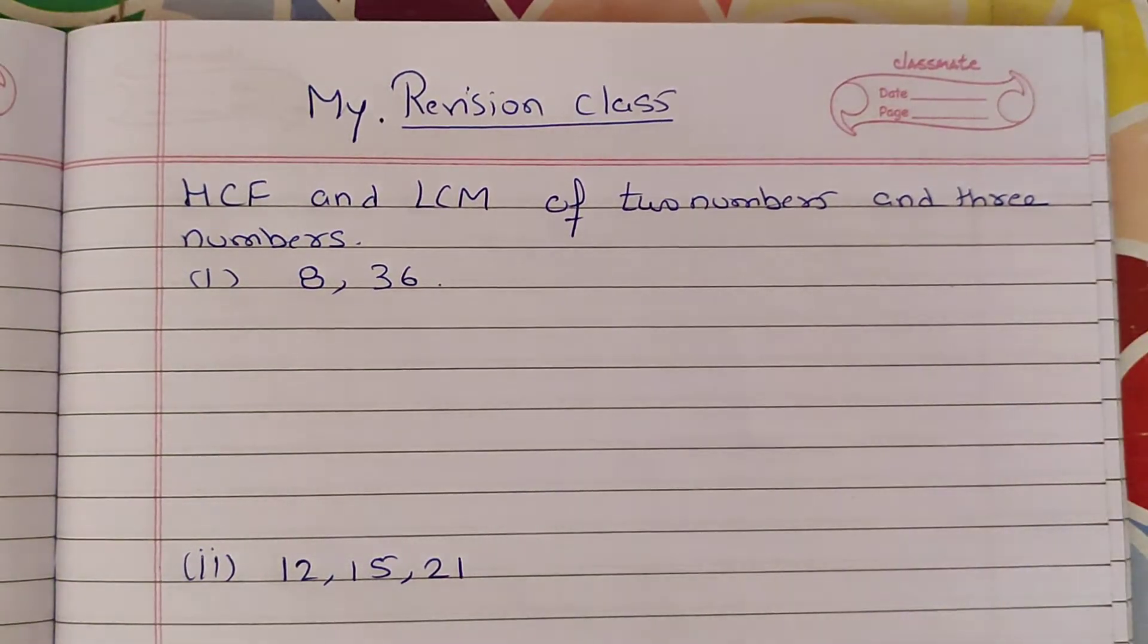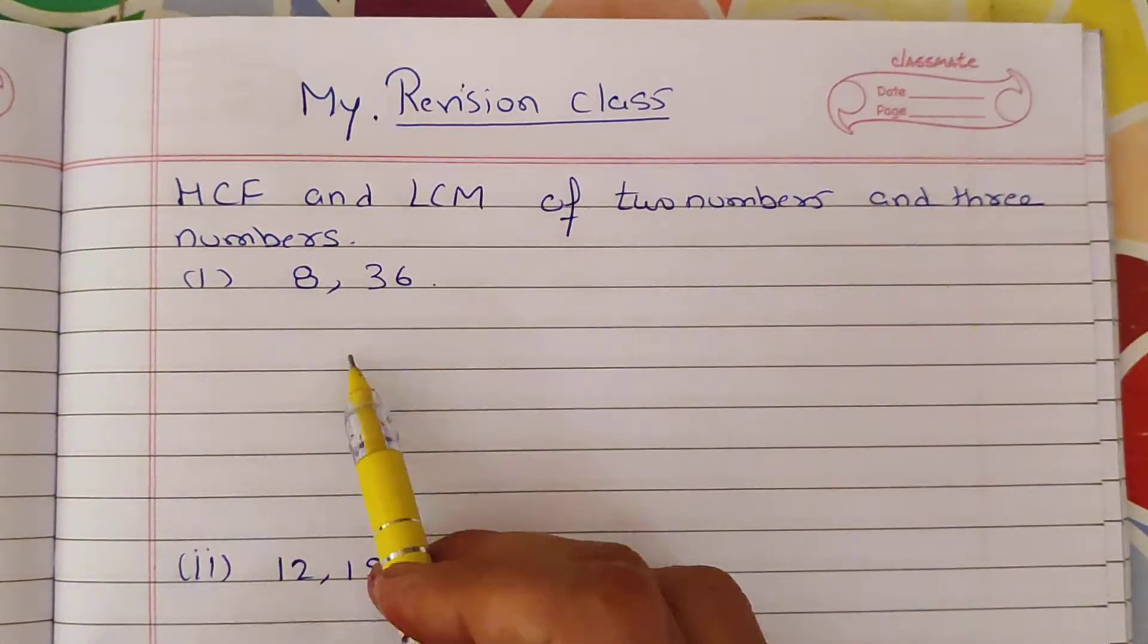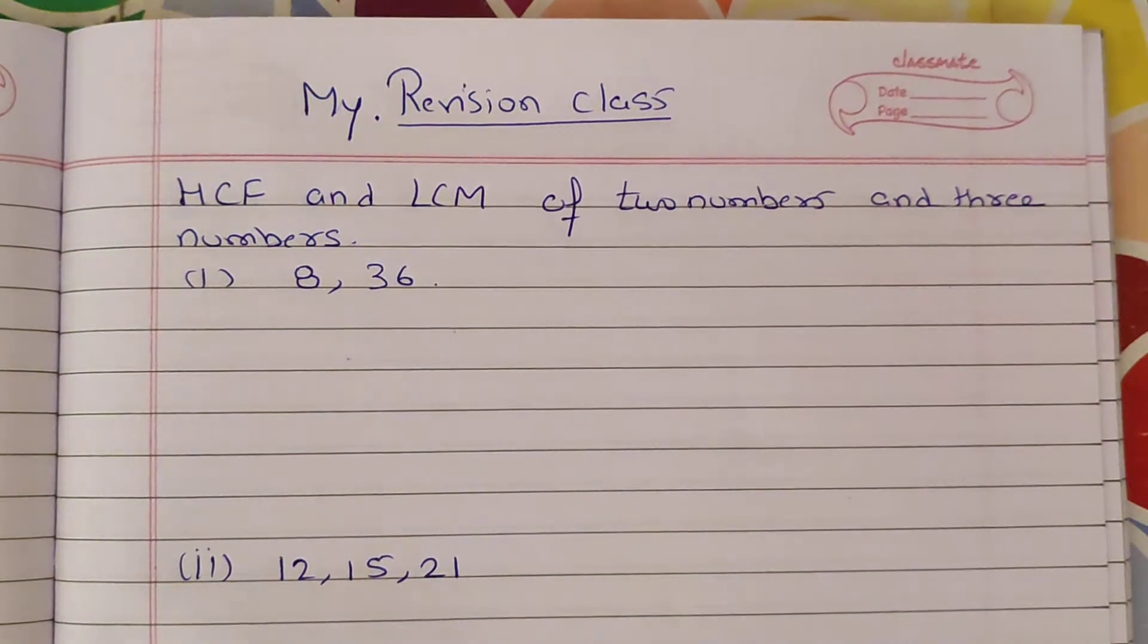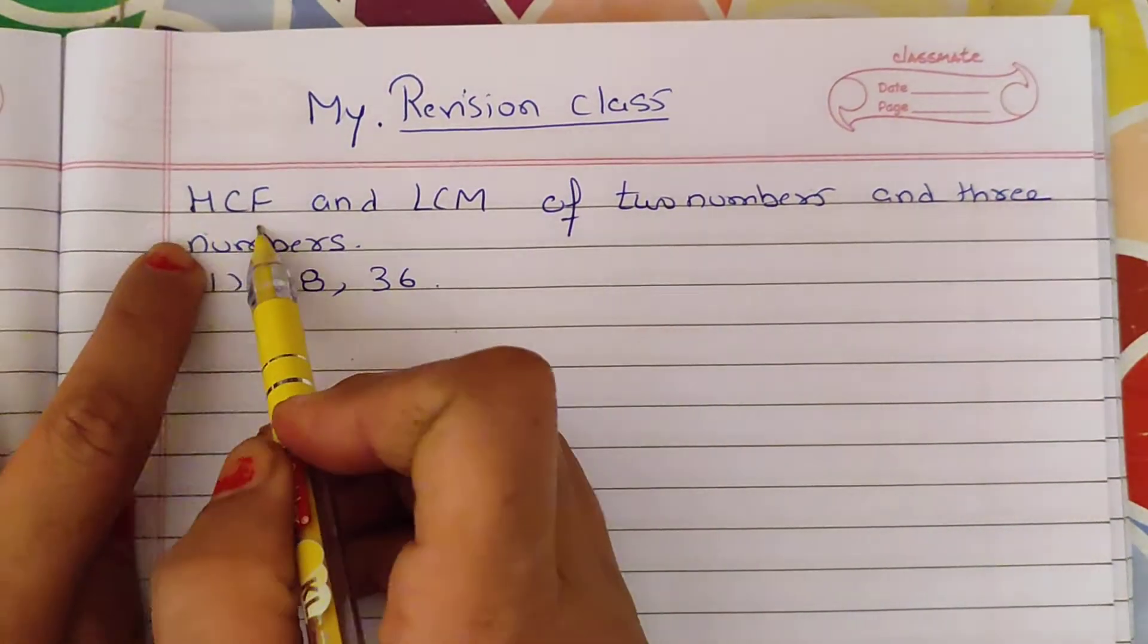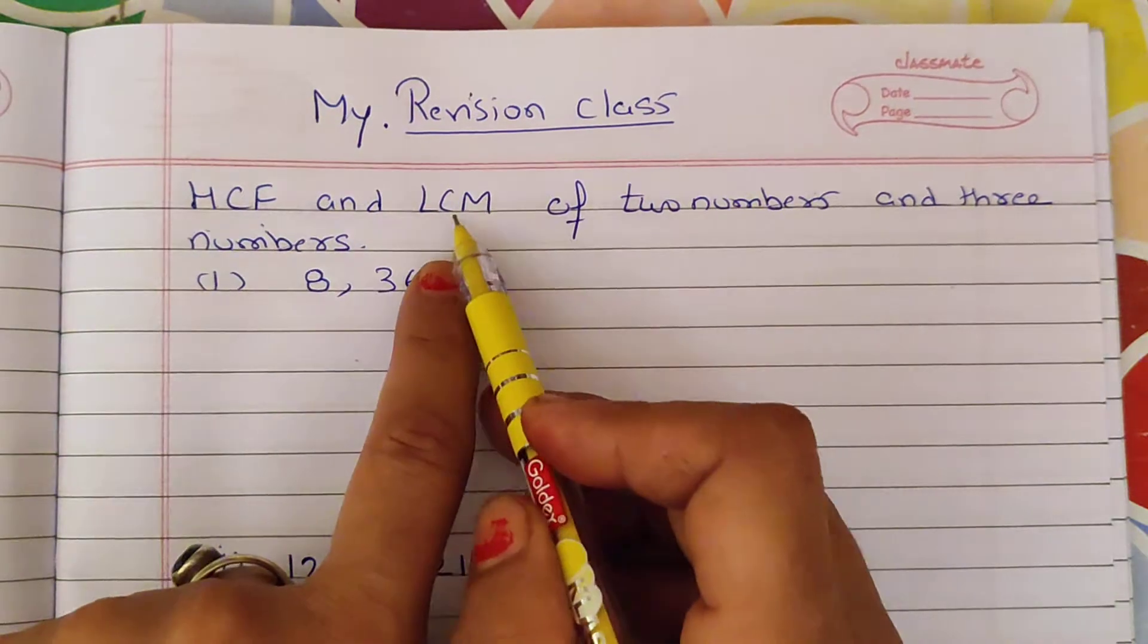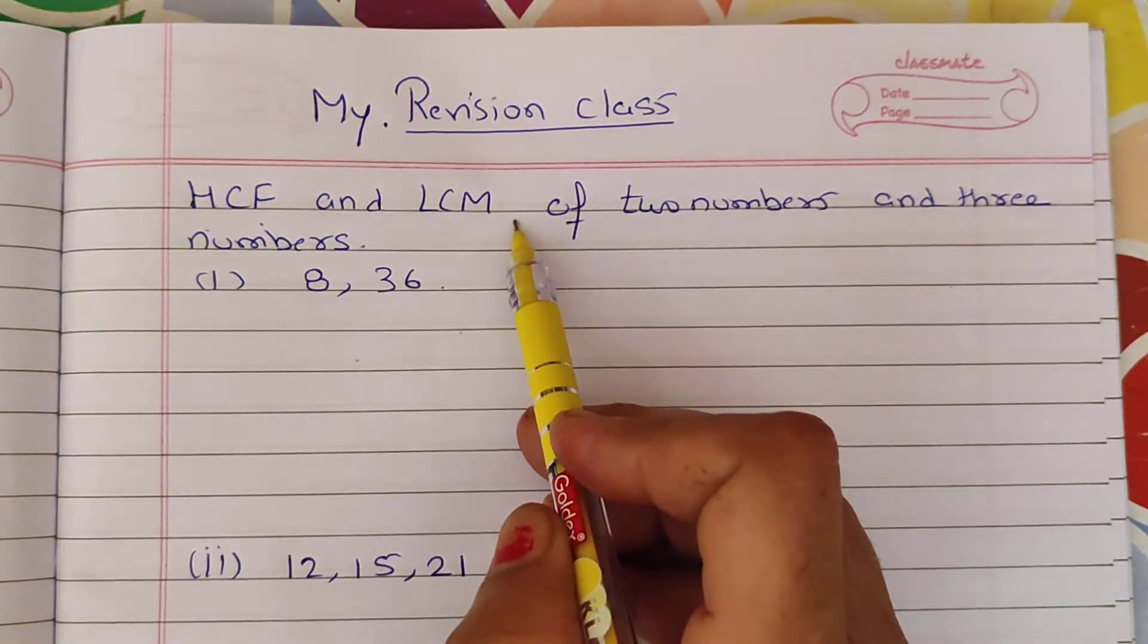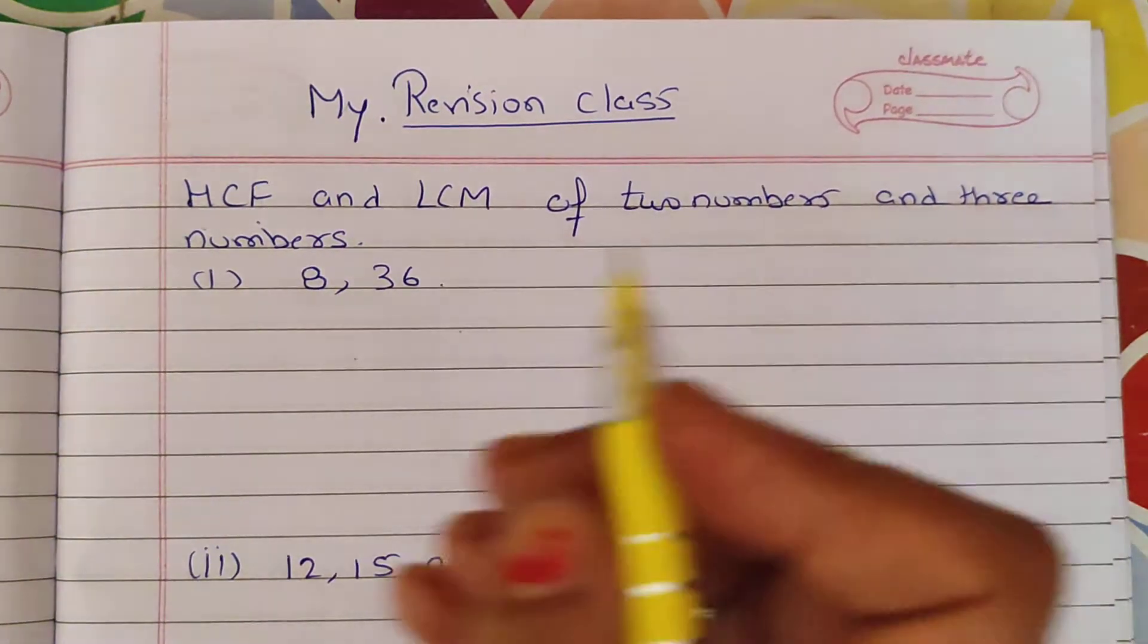This is a very common method that we have to use for two numbers or three numbers for LCM and HCF. Now everyone knows that HCF is the highest common factor and LCM is the least common multiple. How do we use it?